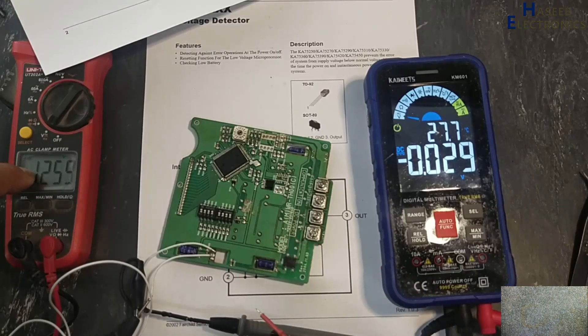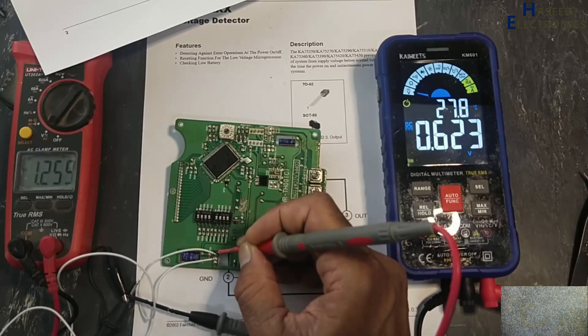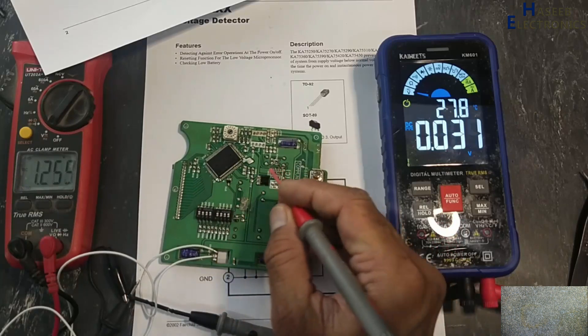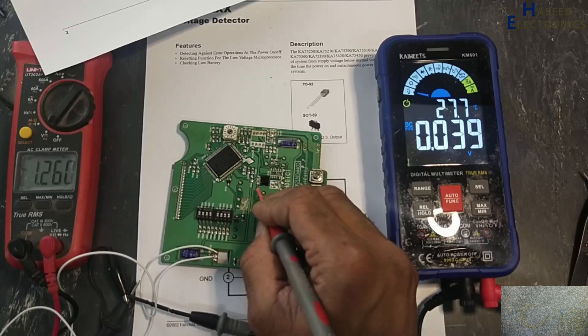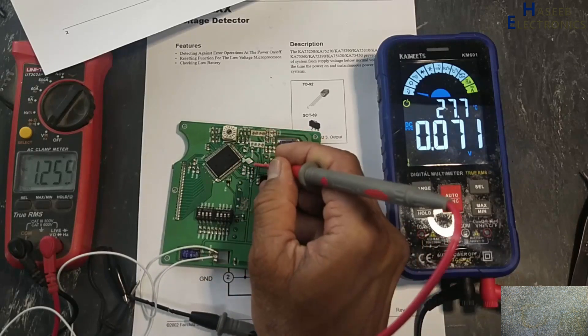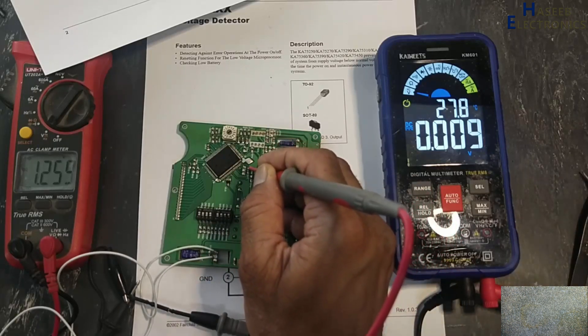Input voltage 1.250, input voltage 1.25. Output at pin number three is now low, zero. And if we see pin number 21, that is reset pin, that is low. Now I will increase the voltage.